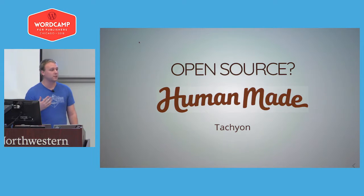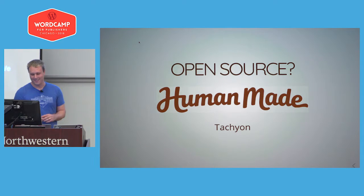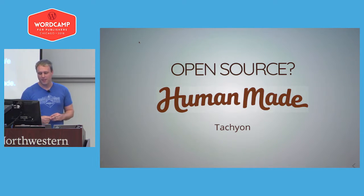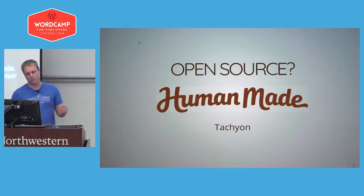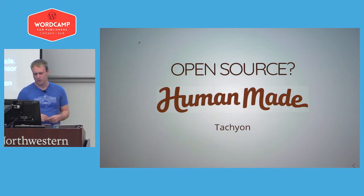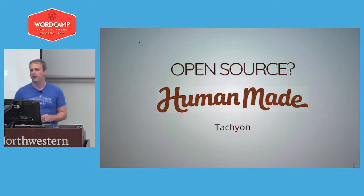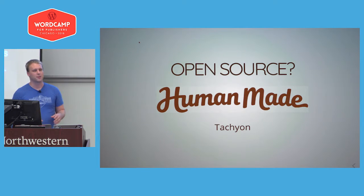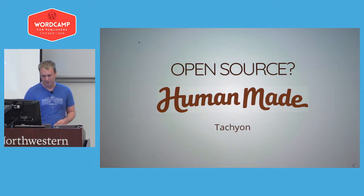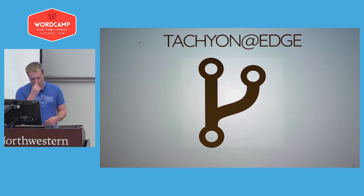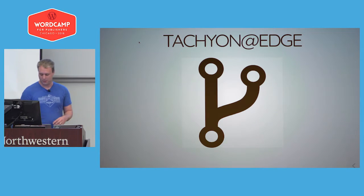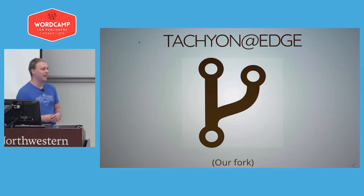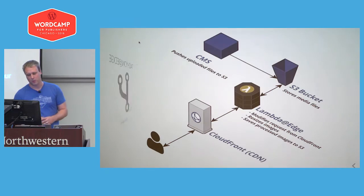There is an open-source solution made by HumanMade called Tachyon, which is based off of Photon. It runs on AWS architecture, which is what our websites are built on. We set it up and it was working okay, but we ran into some issues — I'll gloss over those details since it's a lightning talk, but come talk to me after. So what we did is we forked it and made our own version. We call it Tachyon at Edge.